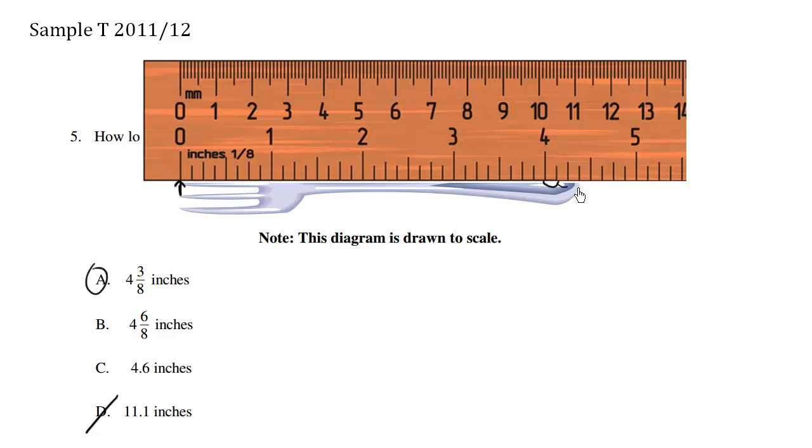This is 1, 2, 3, 4, 5, 6, 7, 8. So this is 1 eighth, this is 2 eighth, this is 3 eighth, this is 4 eighth, which essentially can be simplified to 1 half.